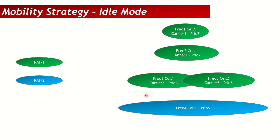The green layers indicate one RAT — radio access technology — while the blue one indicates the second RAT. If we look at it from a 5G/4G perspective, all the green cells belong to the 5G network while the blue cell is an LTE cell.